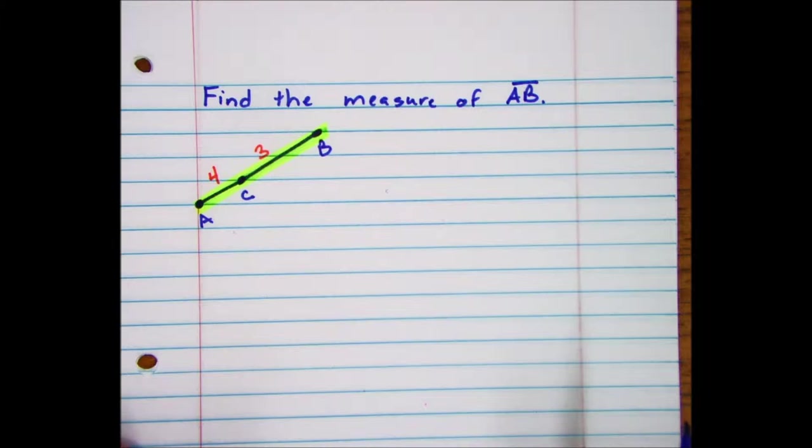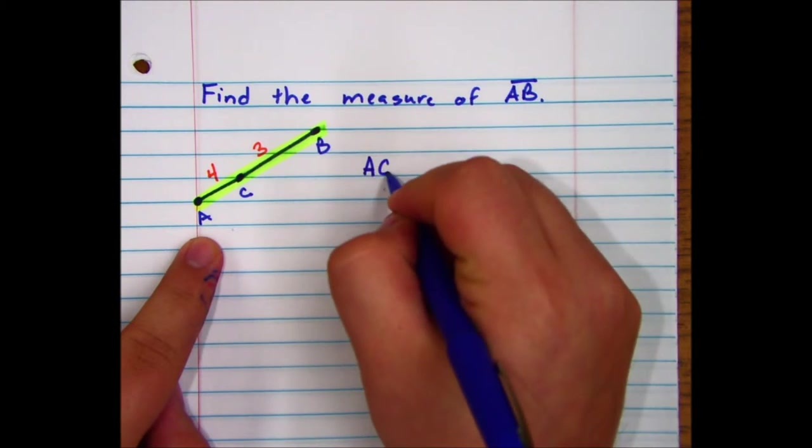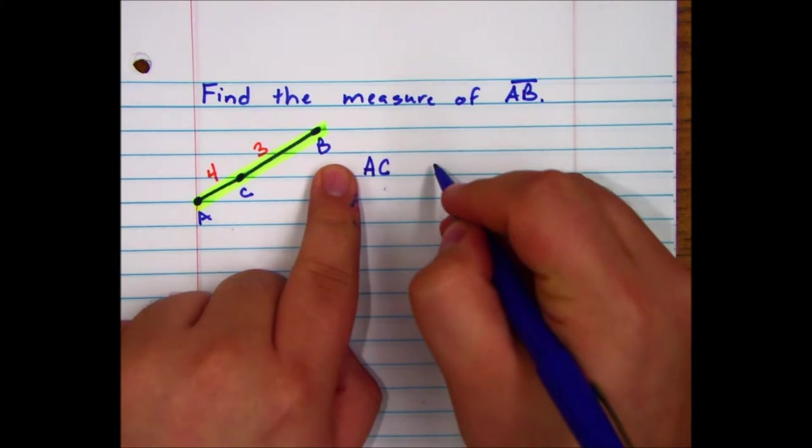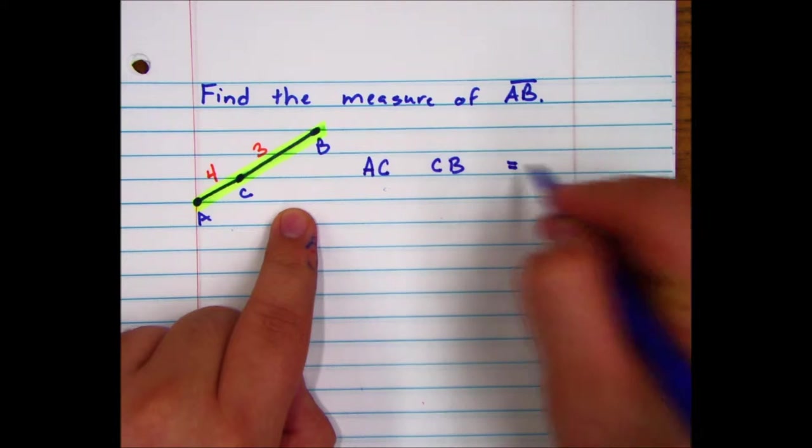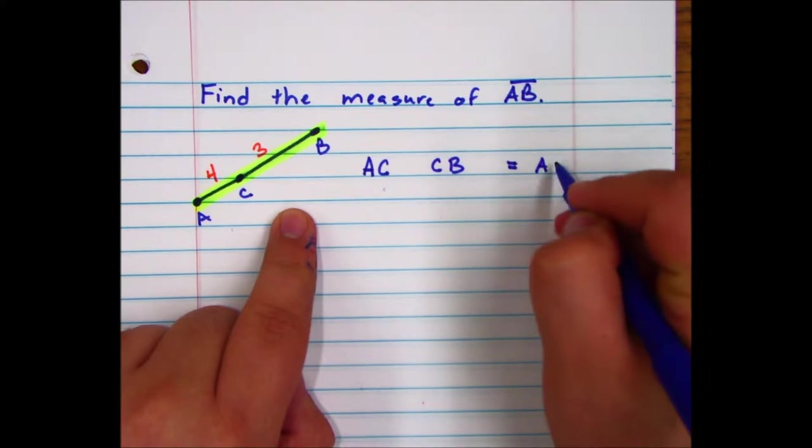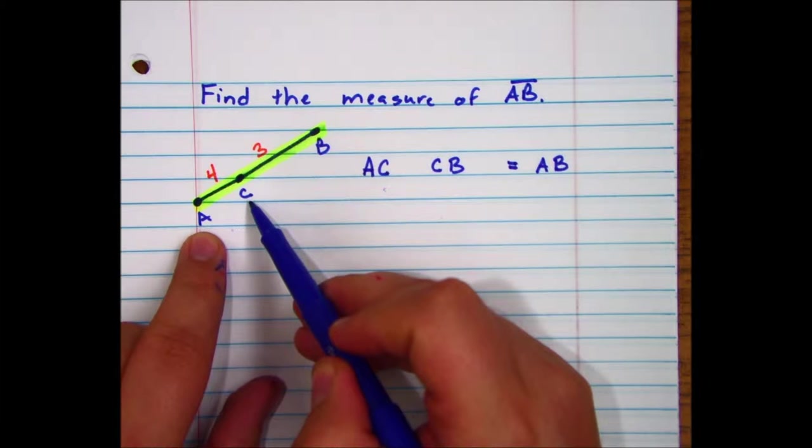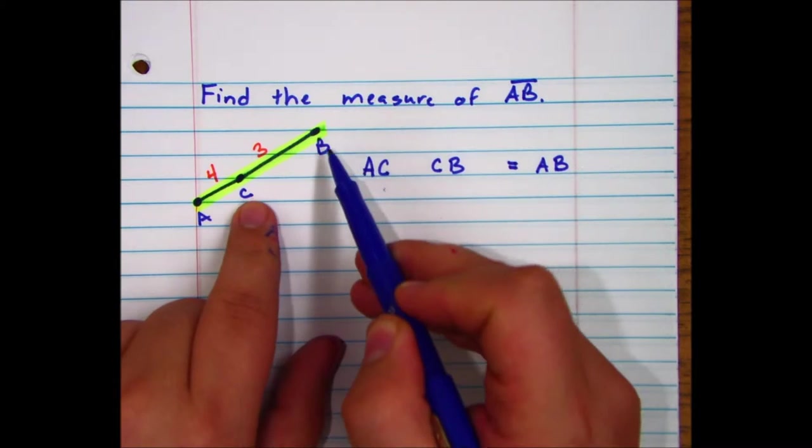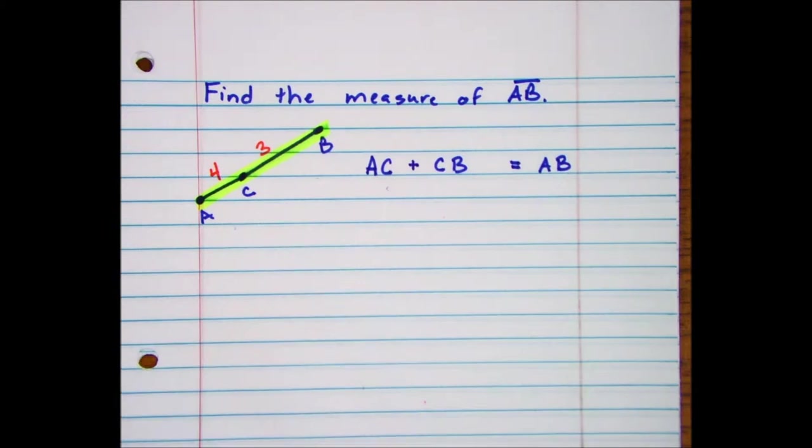But note that there are two minor segments that build the larger segment. Do you see how AC and CB ultimately equal the length of AB? So we're going to simply take the small section AC, the small section CB, and we're going to add them together.